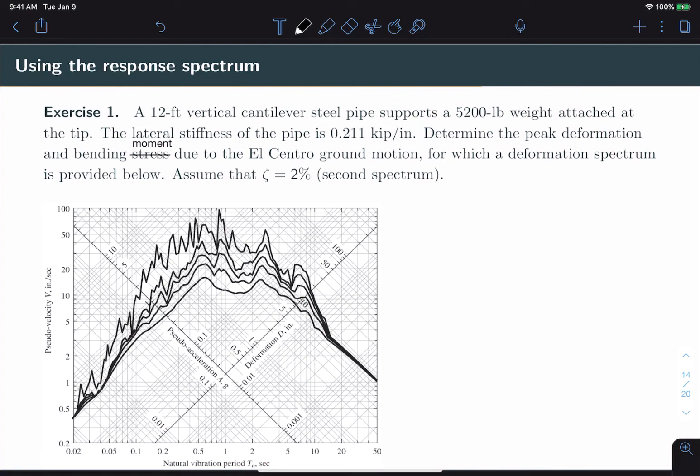Now, assuming we've generated a response spectrum for a particular ground motion, or it's been provided to us, let's look at an example on how to apply this to an engineering problem.